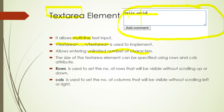The text area allows entering an unlimited number of characters, whereas a text box has a limitation on characters. The size of the text area element can be specified using the rows and columns attributes. Rows specifies the number of rows visible, while columns specifies the number of columns visible. In rows, you will not need to scroll up and down; in columns, you cannot scroll left or right.